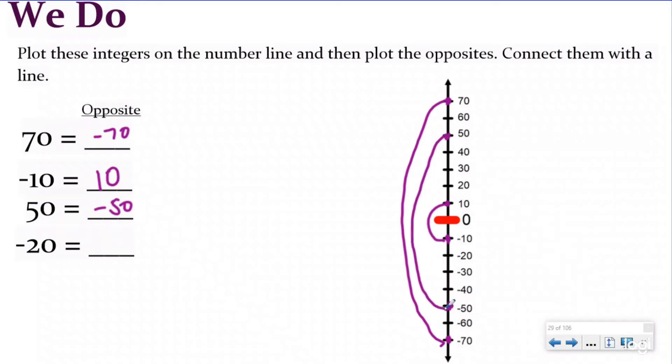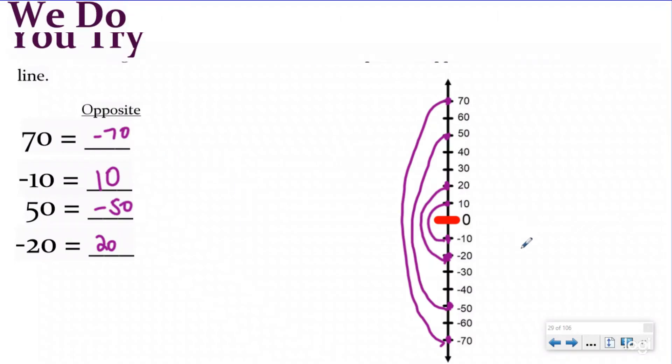And then negative 20 is our next integer. And the opposite would have to be positive 20. Again, because they're on opposite side of zero, and they're both the same distance away from zero. Understanding this concept is really going to help you when you get to adding and subtracting across zero in our later lessons. Because we're going to be doing a strategy called making a zero and recognizing opposites is going to be a huge part of that.